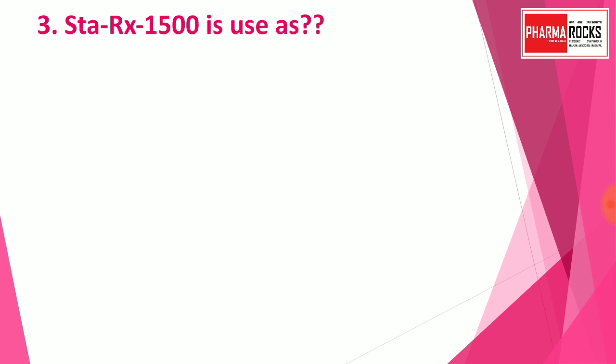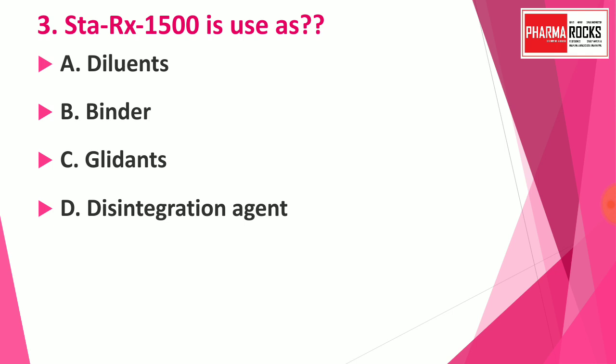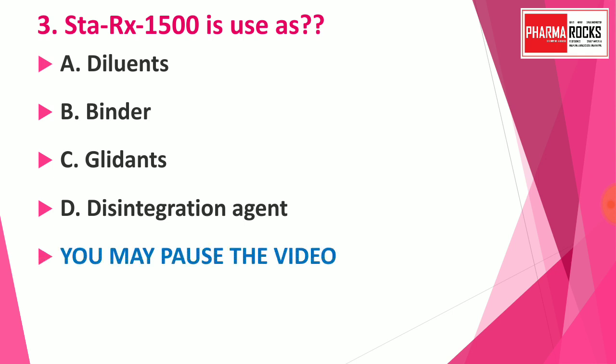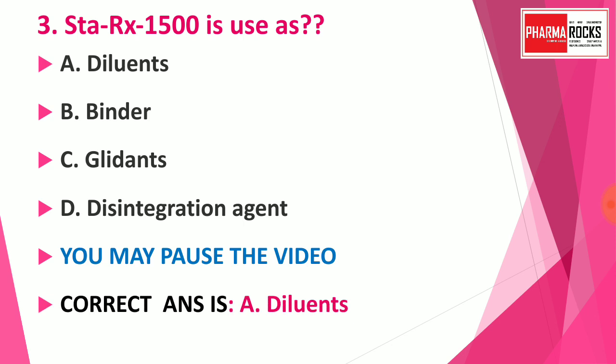Question number three: Starch RX 1500 is used as — Option A: diluents, Option B: binder, Option C: glidants, Option D: disintegration agent. You may pause the video to note down the correct answer. The correct answer is Option A: diluents. Starch RX 1500 is a modified starch and is used as a tablet diluent.